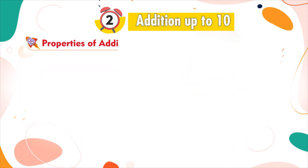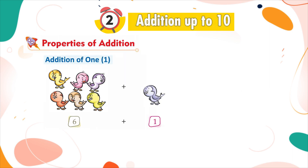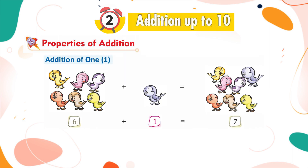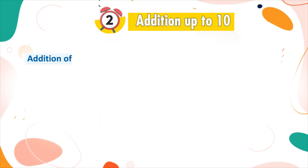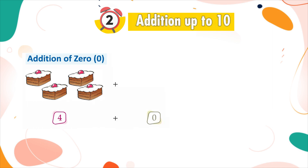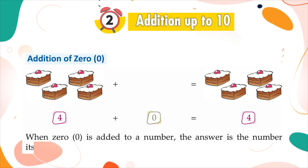Properties of addition. Addition of one: 6 plus 1 is equal to 7. When one is added to a number, the answer is the number that comes just after the given number. Addition of zero: 4 plus 0 is equal to 4. When zero is added to a number, the answer is the number itself.